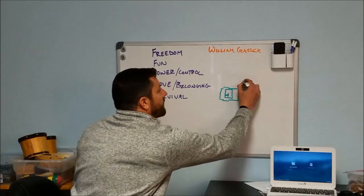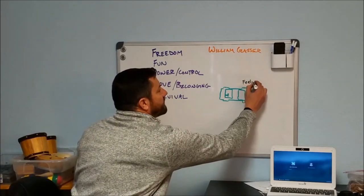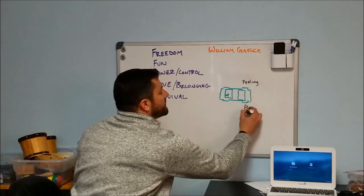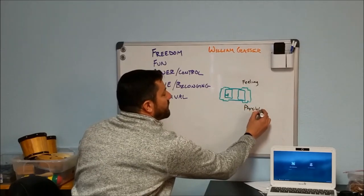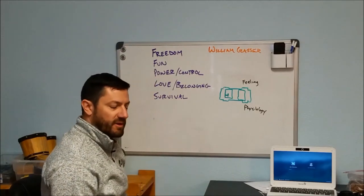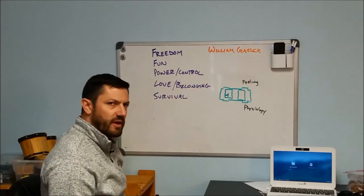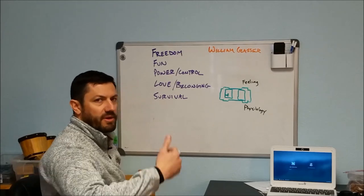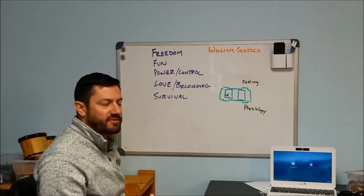So we've got a car and this is viewing from the top down. Here's a steering wheel. What Glasser says is that the rear tires that propel the car are those things that we can't do much about: feeling and physiology. We can sort of control the pace of our heartbeat.